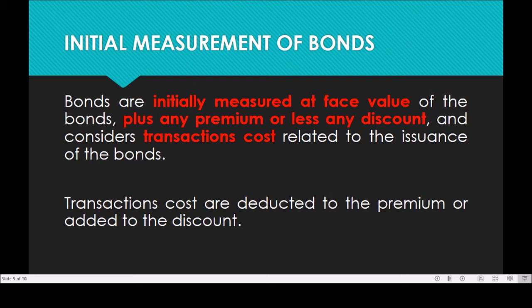According to accounting standards, transaction costs related to the issuance of bonds are deducted from the premium when a premium arises on the sale of the particular bonds. When a discount arises upon sale of that particular bond, the transaction costs are added to the discount of the bonds. To clearly illustrate the initial measurement, two different illustrative examples have been prepared.